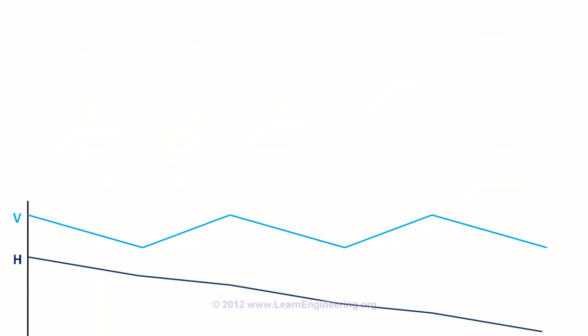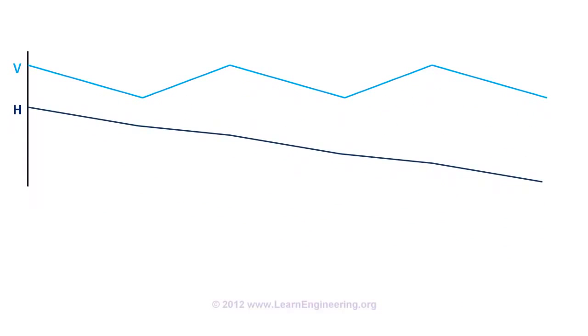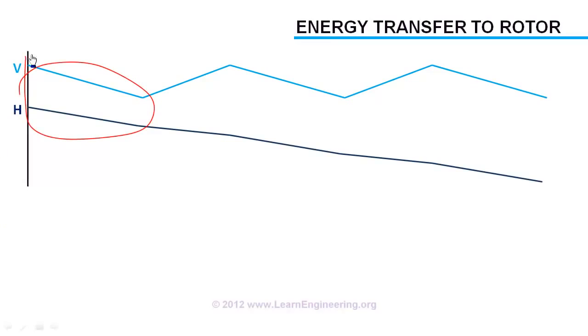Now, we will have a close look at energy transfer at rotor. If you sum kinetic energy and enthalpy energy change across the rotor, you will get total energy transferred. What could be the contribution of each of these terms?